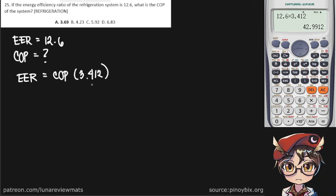Now, you might be asking why it is 3.412. Well, that's because COP is expressed in terms of kilowatts over kilowatts, while EER is expressed in terms of BTU per hour over kilowatt. And this is simply the conversion factor.